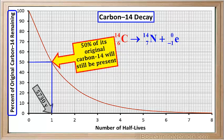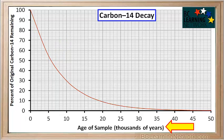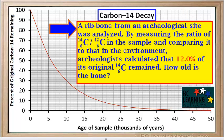We can also look at a graph of the percent of original carbon-14 remaining plotted against the object's actual age in years. We can see that even though we have a different scale on the x-axis, the half-life still shows as 5,730 years. Note that the numbers on the x-axis are in thousands of years rather than just in years. We can use this graph to help us find the age of an object. Here's an example: a rib bone from an archaeological site was analyzed. So the question is, how old is the bone?